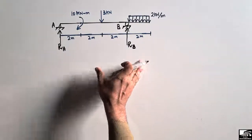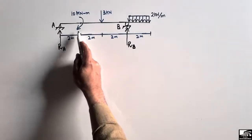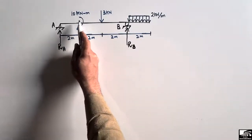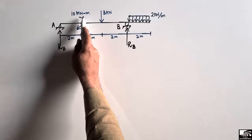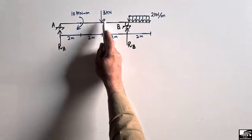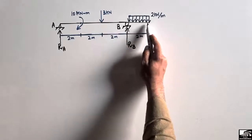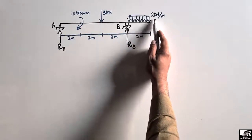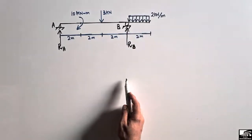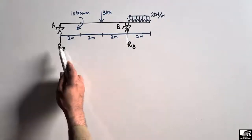Now to find out the support reactions: there is a moment acting on this beam at a distance of 2 meters from the hinge support, with a magnitude of 10 kilonewton-meter. Then there is a concentrated load of 3 kilonewton, and also a uniformly distributed load of 2 kilonewton per meter.